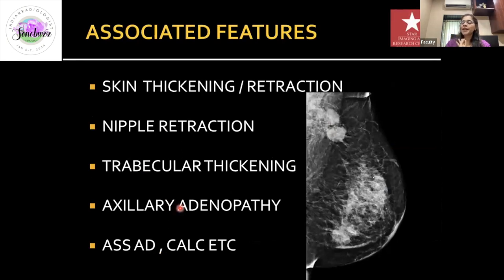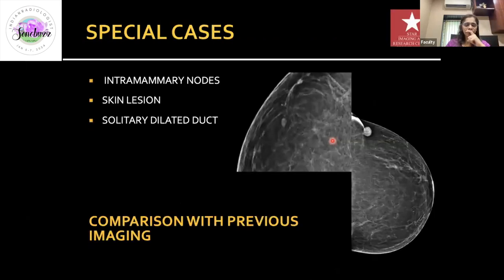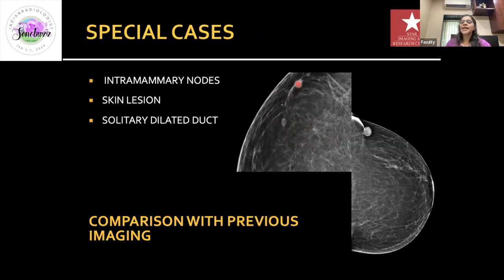Associated features to include alongside mass, asymmetry, architectural distortion, and microcalcifications are: skin thickening, nipple retraction, trabecular thickening, and axillary adenopathy. There are also special findings you can simply describe without a detailed descriptor, such as an intramammary node (just note its position), skin lesions, and a solitary dilated duct.